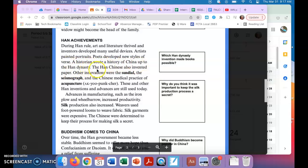The Han Chinese also invented paper. Other innovations were the sundial, the seismograph, and the Chinese medical practice of acupuncture. These and other Han inventions and advances are still used today. So in here, what invention in the Han Dynasty made books possible? You'll find it in that first paragraph.